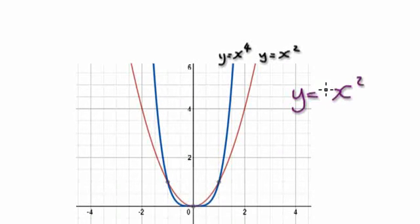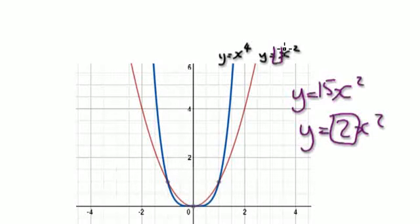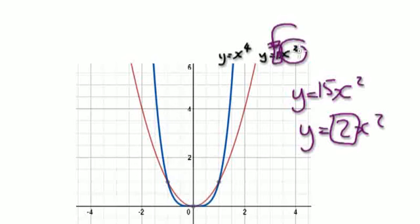Maybe stick a 15 in front, or y equals 2x squared. At the moment the coefficient is 1 — so what would happen if you stick a 2 in front of the x squared? If you stick an 8, the graph becomes thinner. Play around with it and see for yourself.